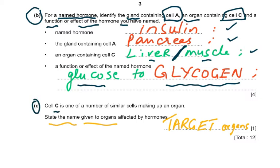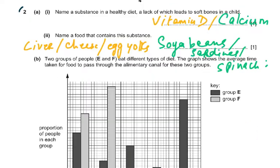The last part of question 1: cell C is one of a number of similar cells making up an organ. State the name given to organs affected by hormones. Those are called the target organs. This is a key syllabus point.